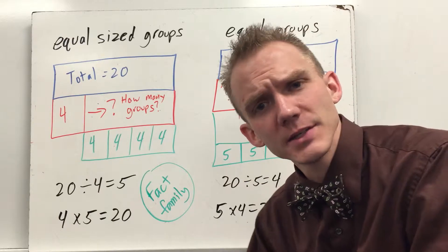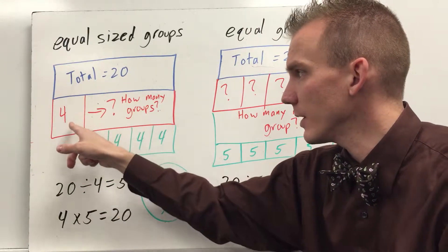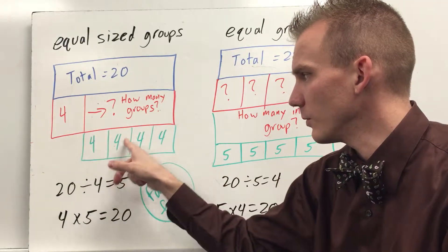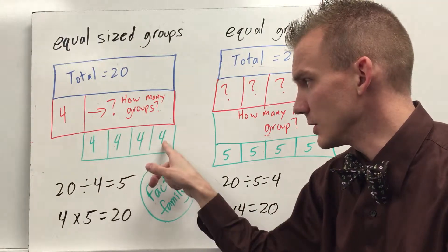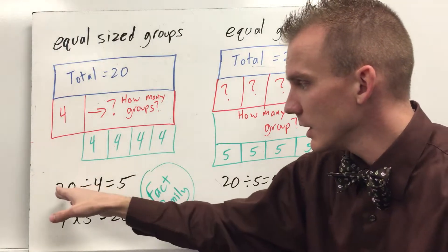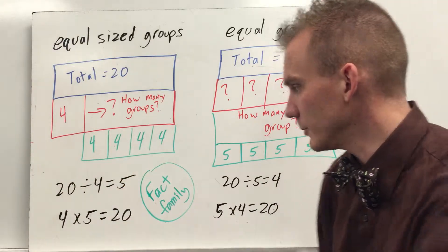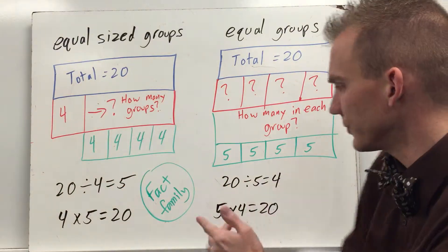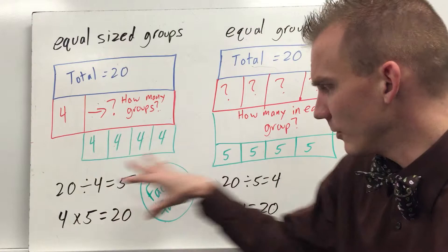A great way to think of this is repeated subtraction. If I take 20 and keep taking away 4, 4, 4, 4, 4, that's 8, 12, 16, 20. I've taken it all away so 20 divided by 4 would equal 5 or you could say 20 divided by 5 equals 4. You have this whole fact family we'll go over in a minute.